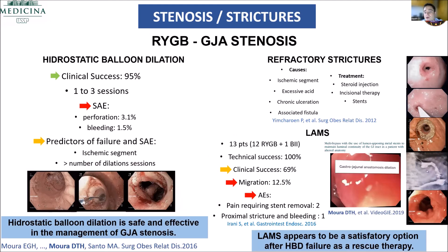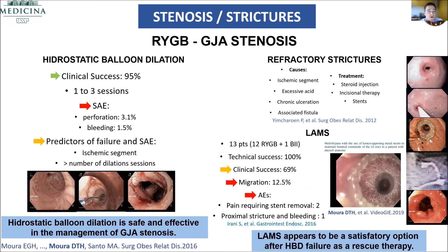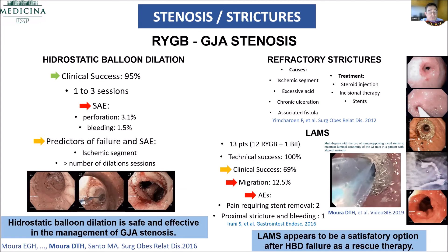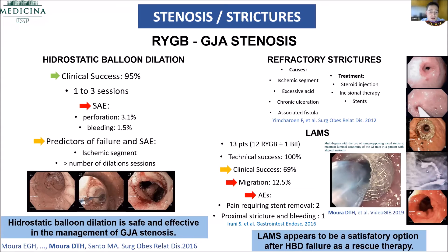Now talking about stenosis. In Roux-en-Y gastric bypass, gastrojejunal anastomosis stenosis — we can do hydrostatic balloon dilation, and we're going to have success in 95% of cases in about one to three sessions. The rate of adverse events is very, very low, but if you have one, you can just treat by endoscopy. For refractory strictures, you can use the lumen-apposing metal stent — Chris Thompson has large experience with that. It's better than the conventional stent; however, clinical success is about 70%, so some patients will need to be operated again.